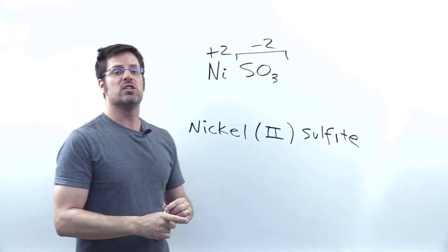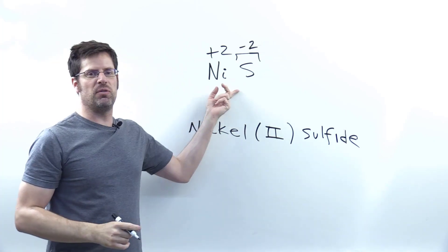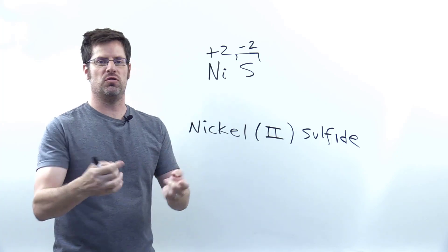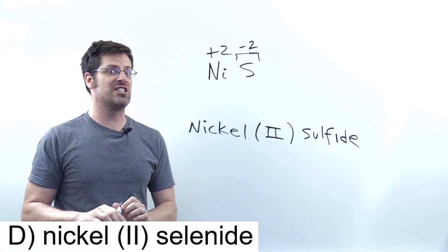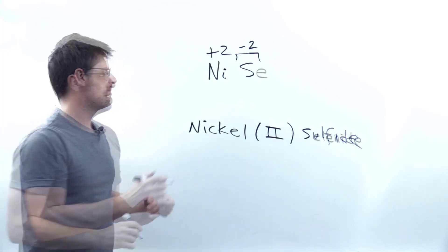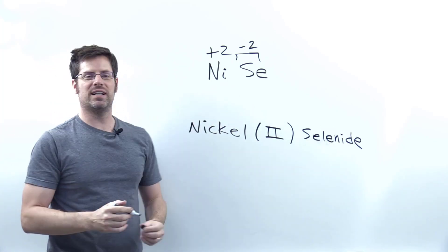Thus, if we had the name nickel (II) sulfide, it would have the simple formula right there, because its anion is a negative two charged sulfur atom, hence a sulfide. Now, what about our last option, selenide? What is that? Well, that's the analogous thing for a selenium atom. Hence, this would be the formula for nickel (II) selenide.